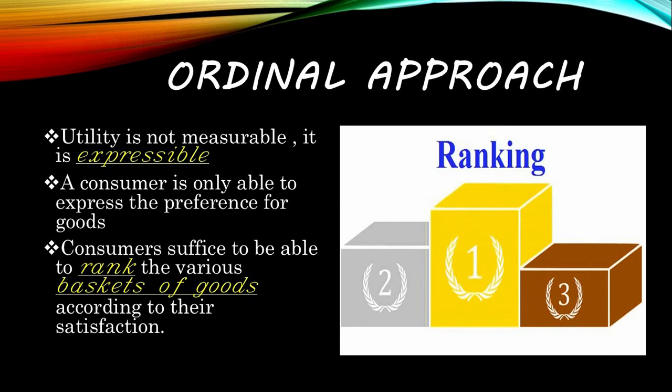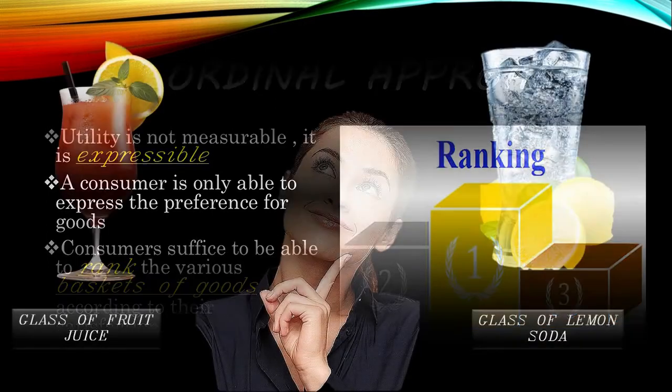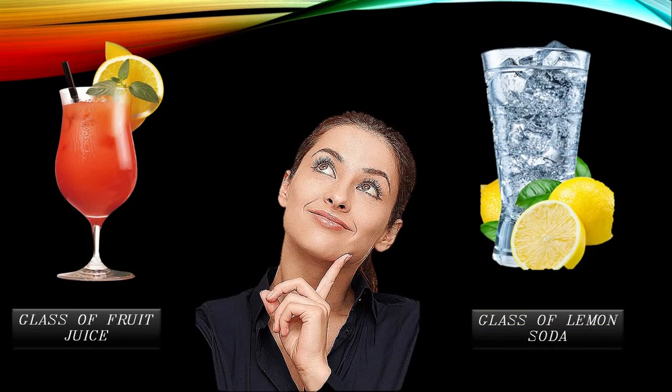Consumers need to be able to rank various bundles of goods according to their satisfaction. For example, suppose she prefers a glass of fruit juice to lemon soda — it means fruit juice has more utility than soda. Fruit juice can be placed in the first position and soda in the second. In terms of utility, she loves a glass of fruit juice more than a glass of lemon soda.